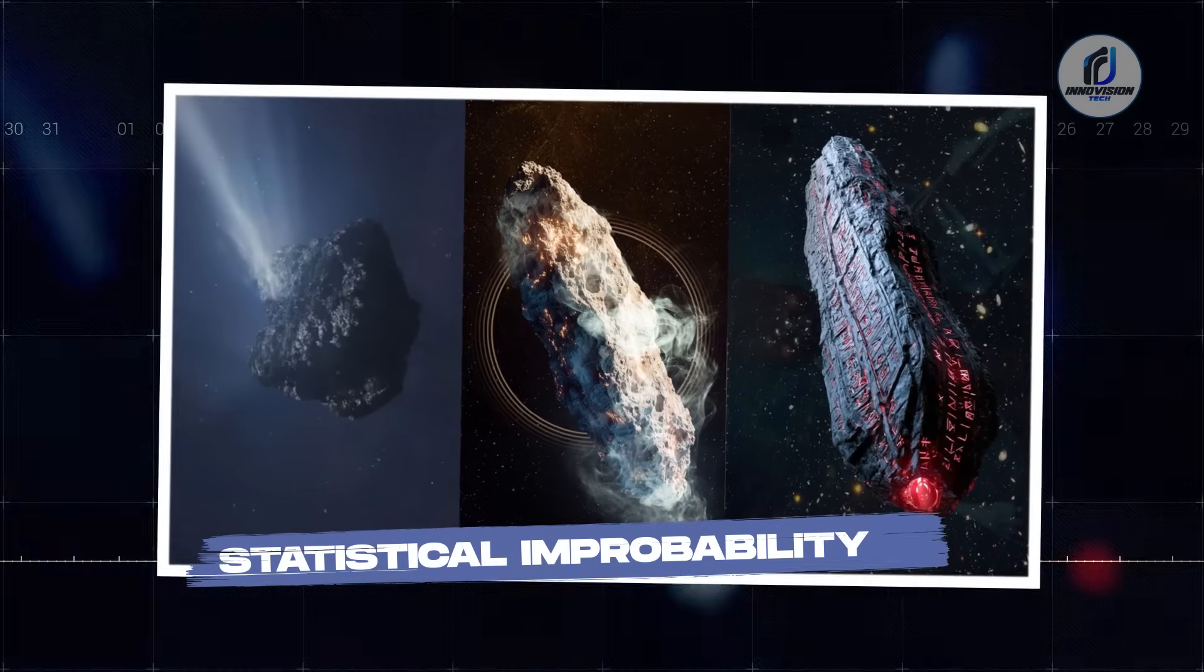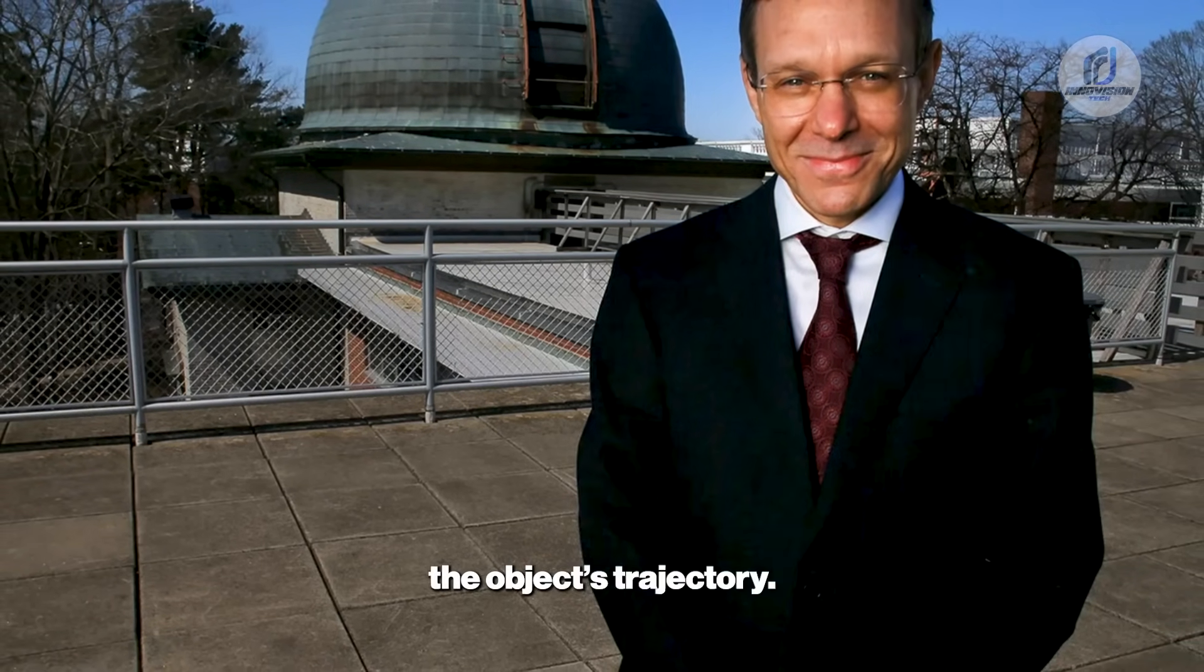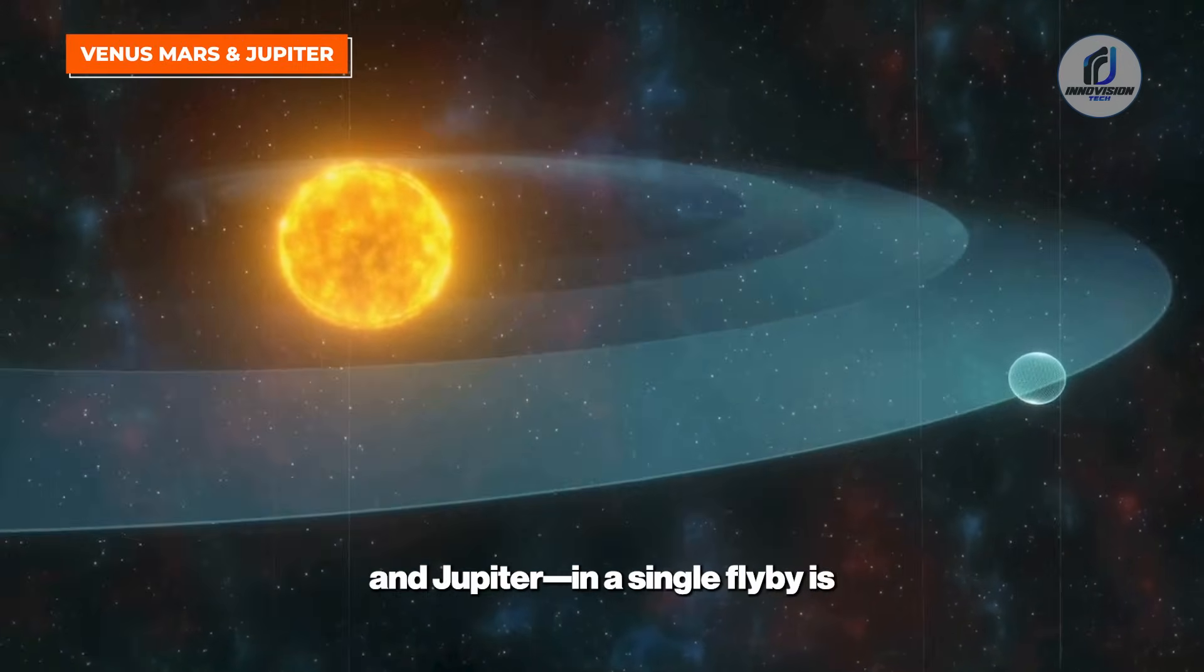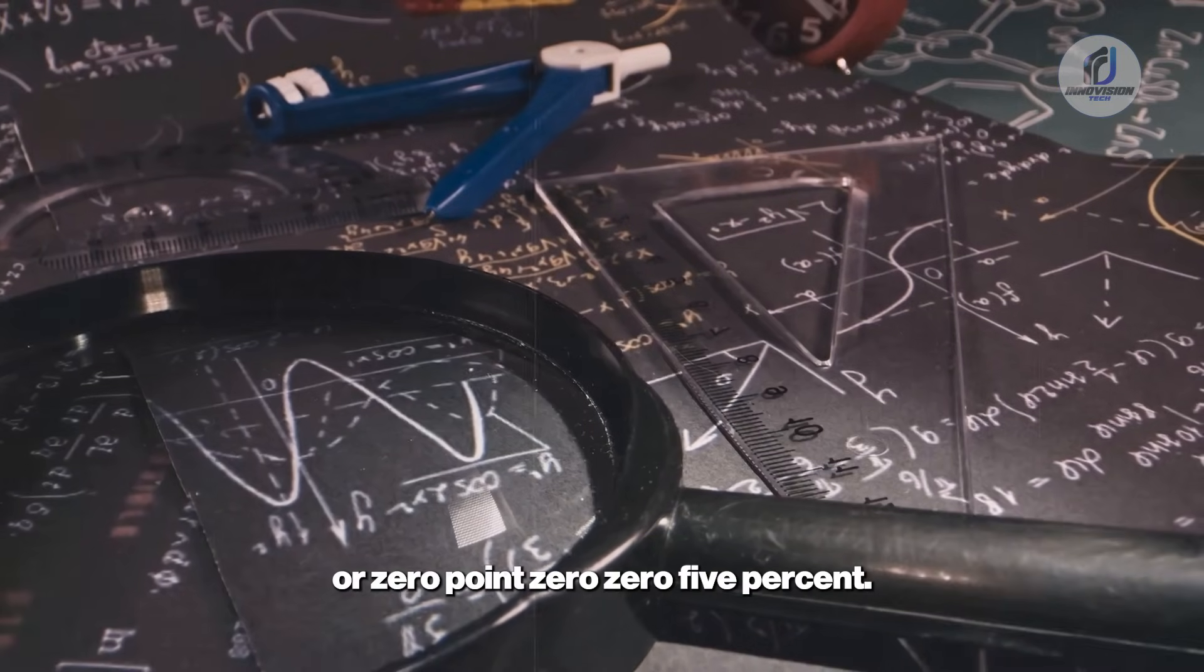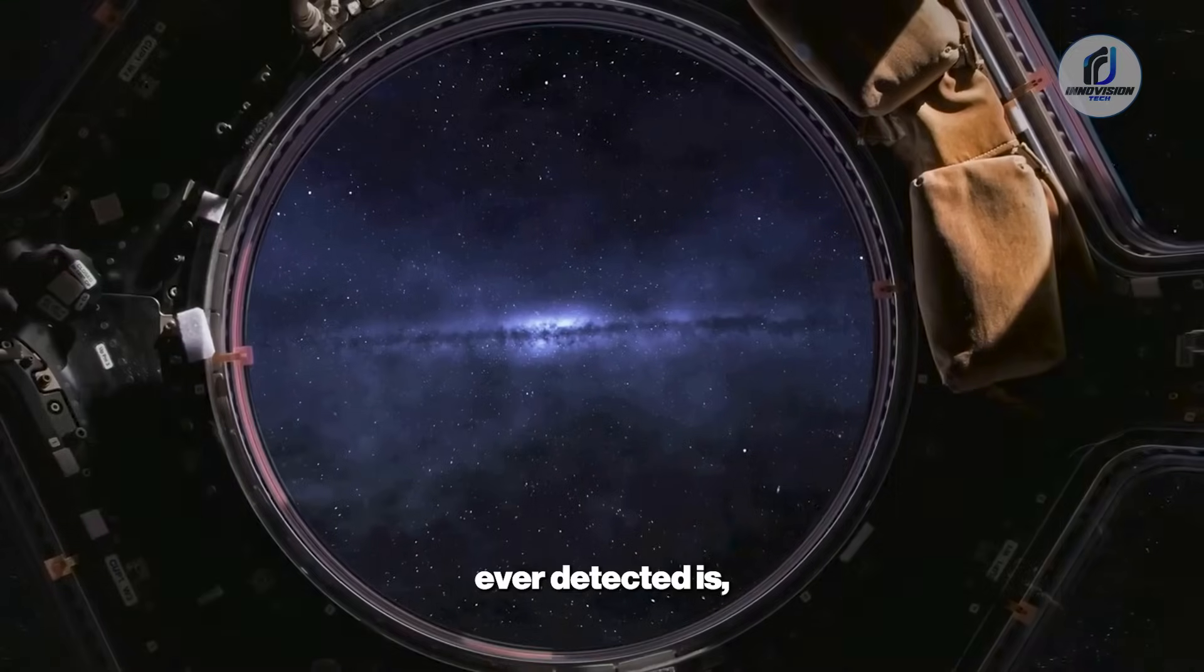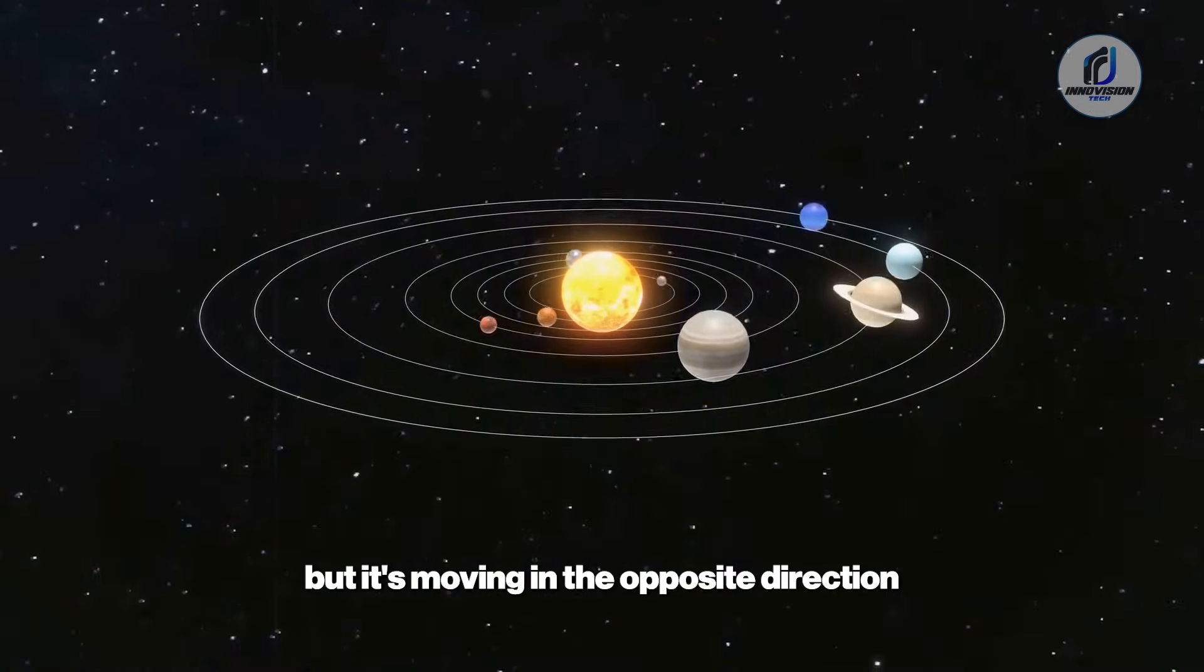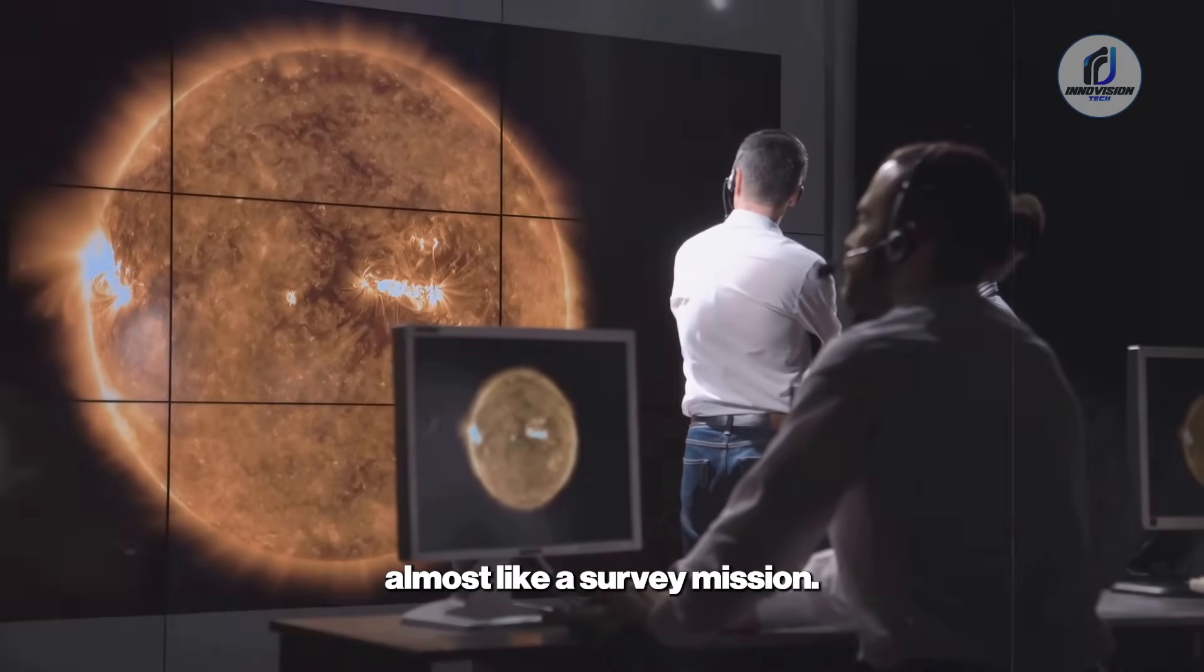Statistical improbability. Beyond its strange chemistry there's another red flag that has Avi Loeb and others asking serious questions, the object's trajectory. According to Loeb, the probability of a random interstellar object passing so close to several planets in our solar system, Venus, Mars and Jupiter, in a single flyby, is astronomically low. His calculations put the odds at about 1 in 20,000, or 0.005%. For an event this rare to happen with only the third interstellar object we've ever detected is, to him, statistically suspect. Furthermore, the object's path is nearly aligned with the plane of our solar system, but it's moving in the opposite direction of the planets. This retrograde orbit allows it to sweep past the inner worlds in a way that looks almost like a survey mission.